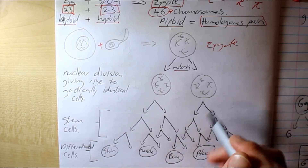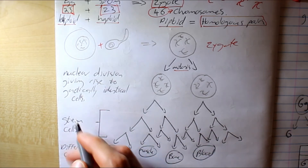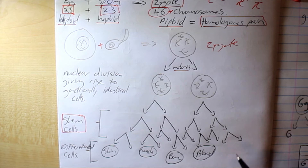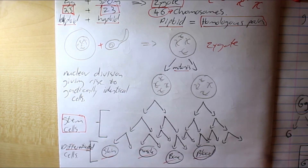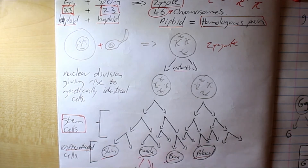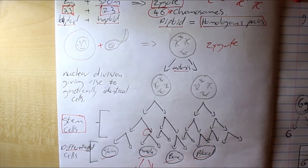These cells continue to divide through mitosis to produce a whole bunch of new cells, and these cells form what are known as stem cells — cells that are not differentiated yet. They can essentially become any type of cell in our body. For example, these cells can differentiate to become skin cells, muscle cells, bone cells, or blood cells. Once a stem cell differentiates to a certain type, it can't go back. If a stem cell differentiates to a muscle cell, that muscle cell will divide to produce more muscle cells.